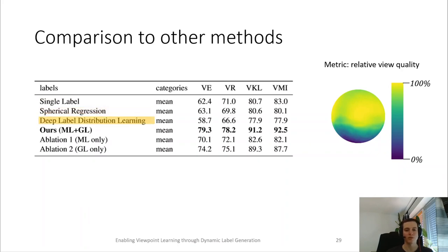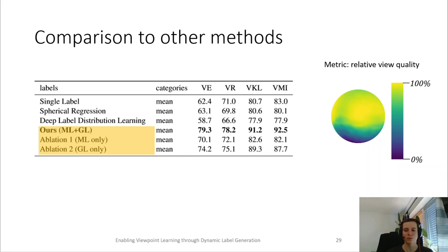Further, we compare to the deep label distribution learning, in which the network tries to predict the entire view quality distribution instead of predicting a single view. Note that all three cases of our dynamic label generation outperform the existing methods, and that the combination of our two proposed methods yields the best result over all four viewpoint quality metrics.